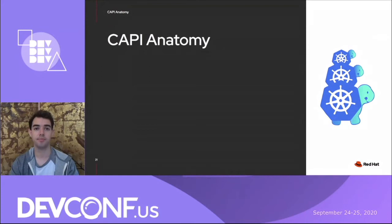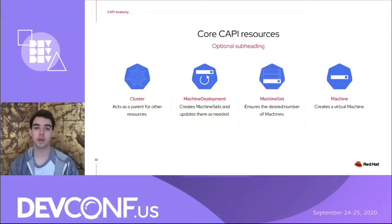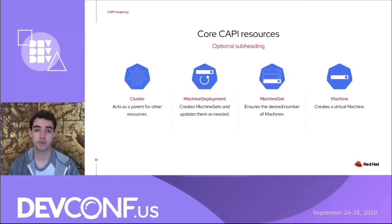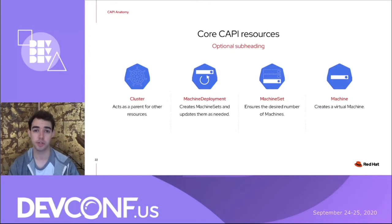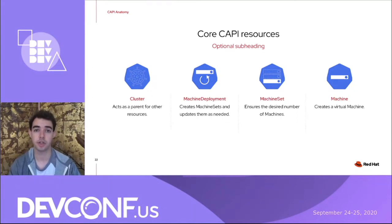CAPI is implemented via custom resource definitions on Kubernetes, which allow you to extend the Kubernetes API and add custom types. In CAPI there are four core custom resources: Clusters, which act as a parent for all other resources - every CAPI resource must belong to a cluster; Machines, which are responsible for creating virtual machines that join the cluster; MachineSets, which create a number of identical machines just like a ReplicaSet creates identical pods; and MachineDeployments, which are responsible for rolling out updates to machines when configuration changes, just like a Deployment rolls out changes for pods.